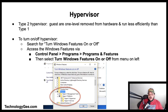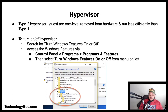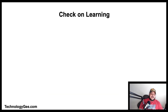With a Type 2 hypervisor, guests are only one level removed from the hardware and therefore run less efficiently than guests on a Type 1 hypervisor. To turn a hypervisor on or off, you can search for 'Turn Windows features on or off,' or access it via Control Panel > Programs > Programs and Features, then select 'Turn Windows features on or off' from the menu.